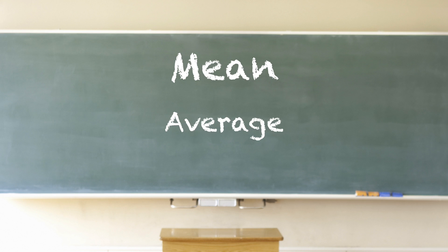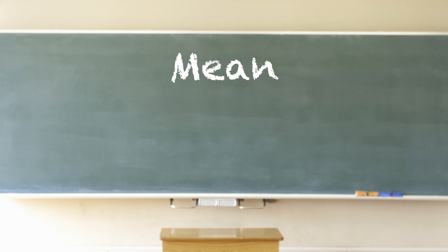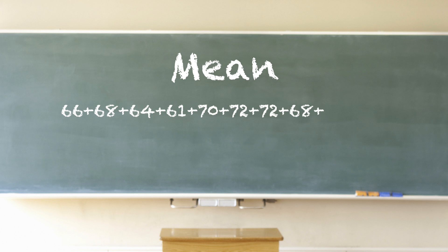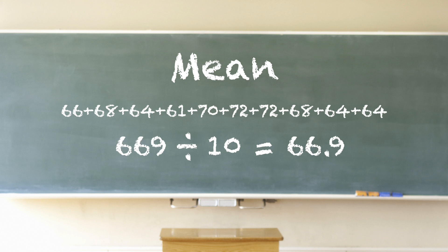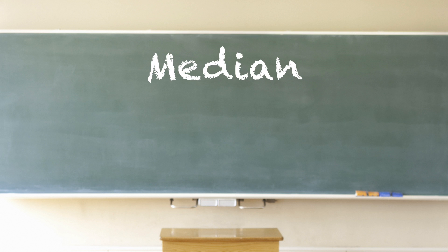Mean: most likely you have heard the word average. The mean is simply the average of a set of numbers — you add the numbers together and then divide the result by the quantity of numbers. For example, add the temperatures together and then divide by 10: 669 divided by 10 equals 66.9. So 66.9 is the mean of the data set.